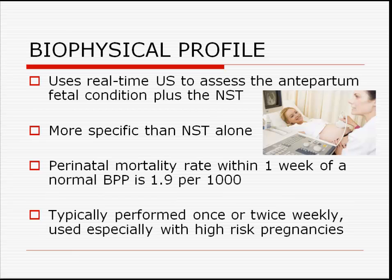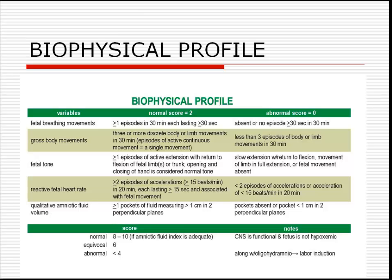If the NST is non-reactive, the next test that is indicated is called a biophysical profile. During this antepartum test, an ultrasound is performed to evaluate for normal levels of amniotic fluid and to watch the baby for appropriate movement. This table lists the components of the biophysical profile. The categories evaluated include the presence of fetal breathing movements, full body movements, and movements of the fetal limbs, in addition to the presence of sufficient amniotic fluid and whether the NST was reactive. Each of the five categories that is observed receives two points; categories that are not observed receive no points. Possible biophysical profile scores are ten, eight, six, four, two, or zero points. Ten and eight points are considered normal. Four or less points usually means that the baby needs to be delivered.